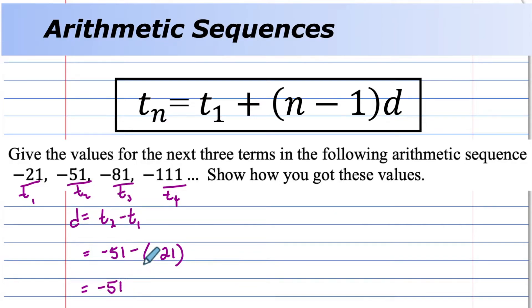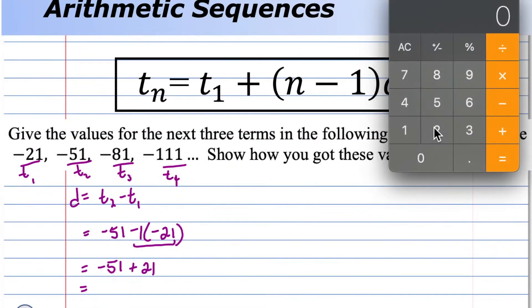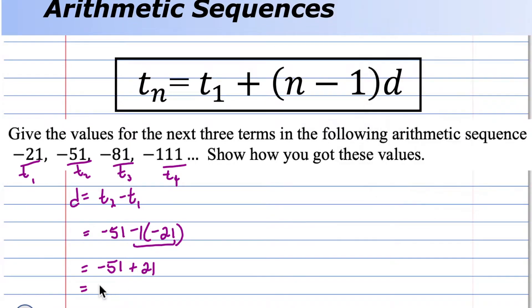Negative 51, this is like a negative times a negative, which is a positive 21. 21 minus 51 is negative 30. And I mean, you can go ahead and do this one as well. Negative 81 subtract negative 51 and get the same D value.